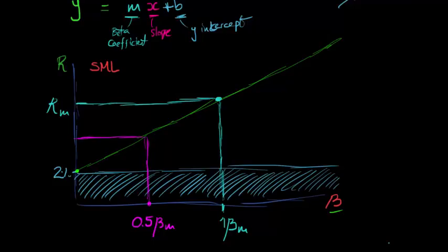I think we can tell that this distance is the same as this distance here. Multiplying by 0.5, we're effectively getting half of the equity risk premium.